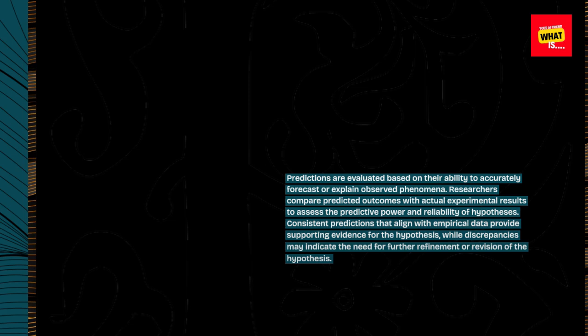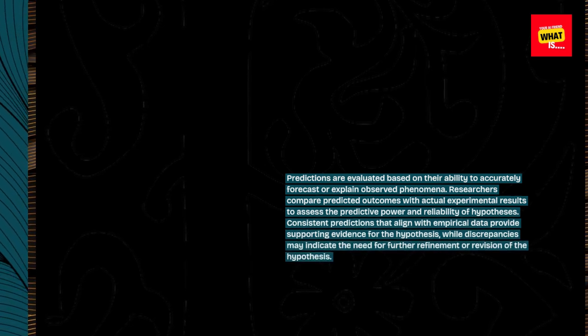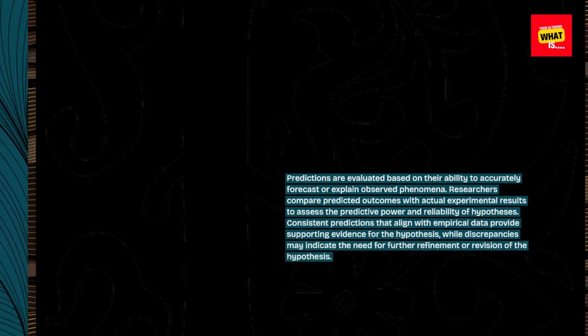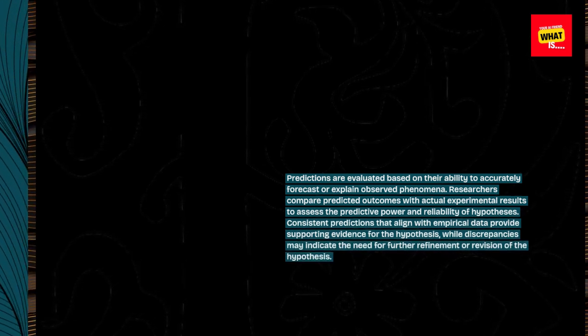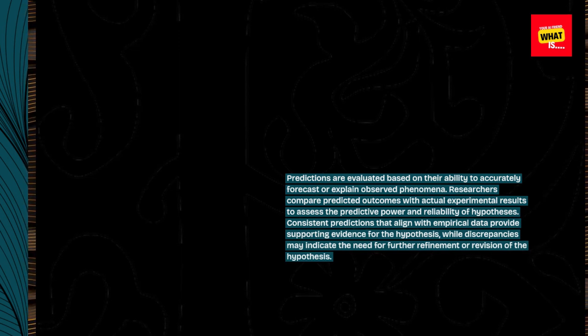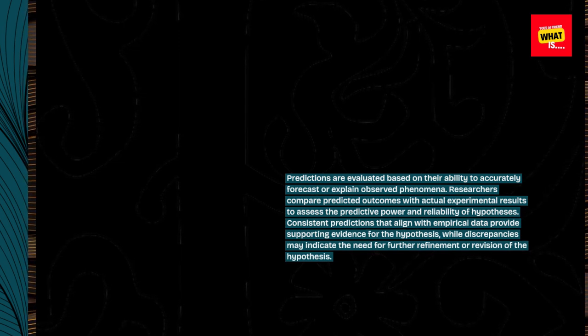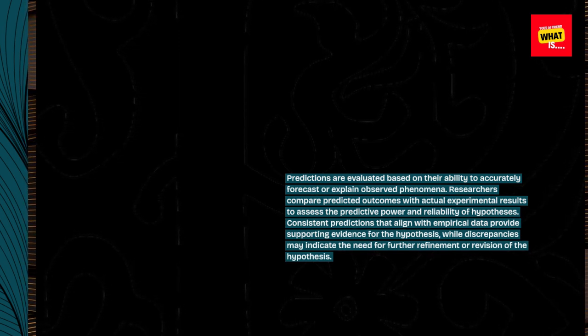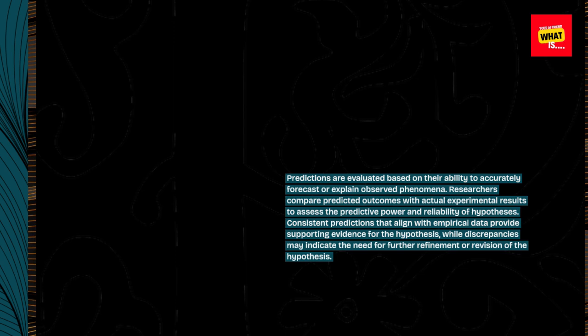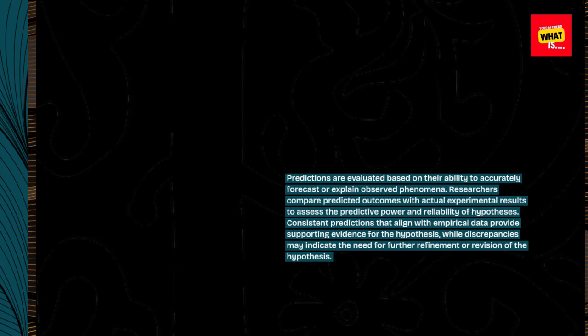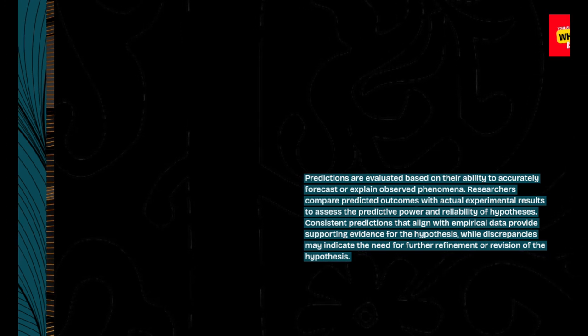Predictions are evaluated based on their ability to accurately forecast or explain observed phenomena. Researchers compare predicted outcomes with actual experimental results to assess the predictive power and reliability of hypotheses. Consistent predictions that align with empirical data provide supporting evidence for the hypothesis, while discrepancies may indicate the need for further refinement or revision of the hypothesis.